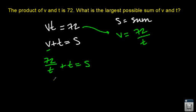Now what I'm going to do is I'm going to rewrite this so that all of my variables are in the numerator. The definition of negative exponent says if I have an exponent in the denominator, I can move it to the numerator by changing the sign of the exponent. So when I move it to the numerator, it becomes 72t to the negative 1 plus t equals s.